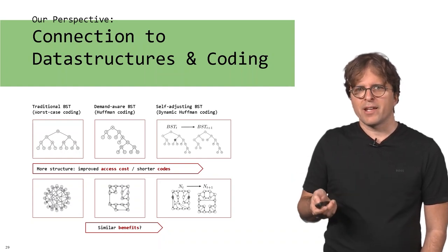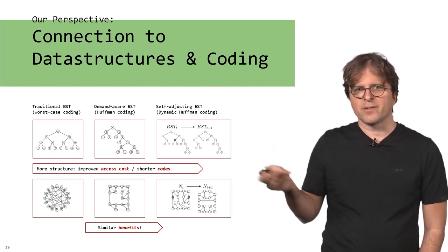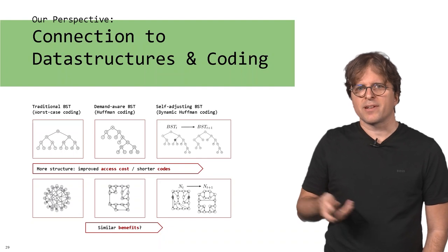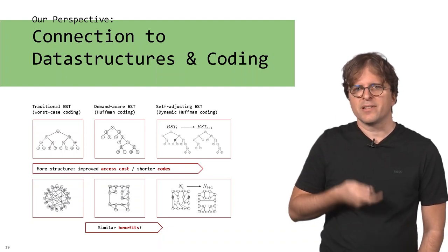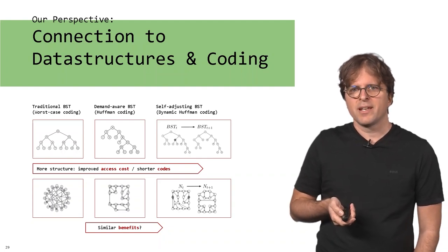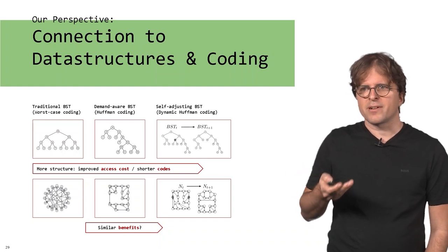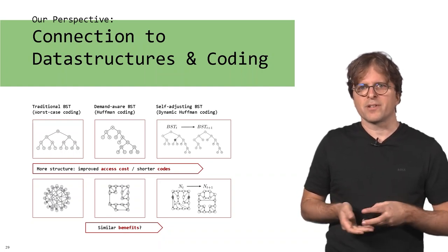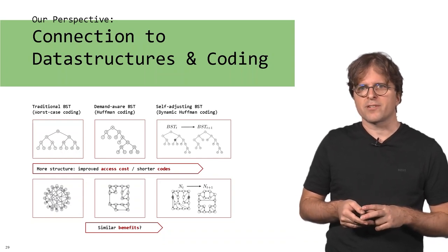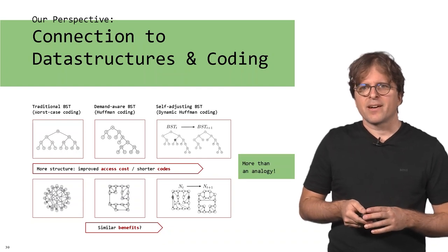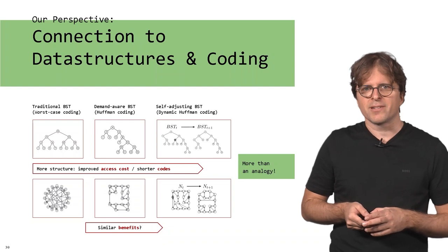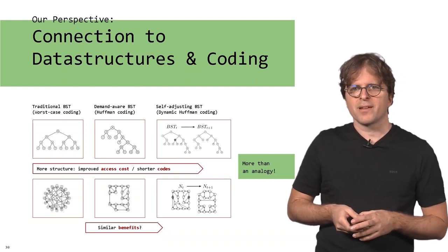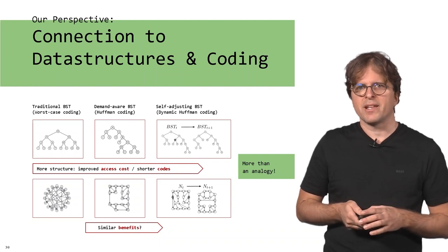The vision here is that we want to get very similar benefits in the context of networks. If we don't have any information about the communication, the best we can do is probably some kind of constant degree expander graph. But the more information we have, we can get some statistics of the communication and build a network that is biased, optimizing towards this distribution. Or you may even go to something self-adjusting where the structure changes over time and adapts to the traffic pattern that may evolve over time. Hopefully we can get very similar benefits like in data structures. We will see there's more than an analogy - you can take metrics and algorithmic techniques from data structures and coding to build better networks. That's one of the main insights we want to reveal.